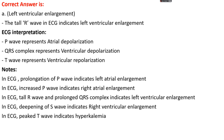The tall R wave in ECG indicates left ventricular enlargement. In ECG we find three types of waves: the P wave, the QRS complex, and the T wave. The P wave represents atrial depolarization, which is known as atrial contraction. The QRS complex represents ventricular depolarization, that is ventricular contraction, and the T wave represents ventricular repolarization, that is ventricular relaxation.